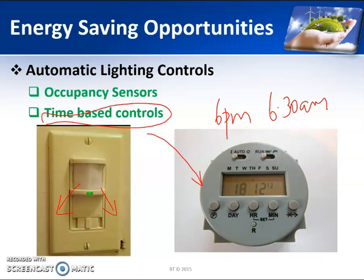These are some basic energy saving opportunities possible in the case of lighting systems, and there are many more ideas. One such thing is proper maintenance of a lighting system. In the case of street lights, after one year of use there will be a lot of dust on the luminaire, which decreases the amount of light reaching the walking area. Cleaning that luminaire will help in increasing the light output. We can identify many more opportunities for energy saving in lighting systems.